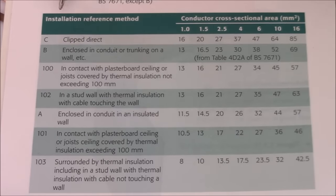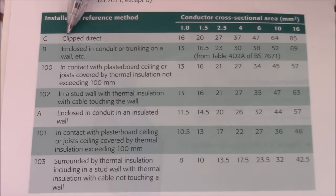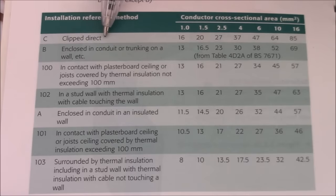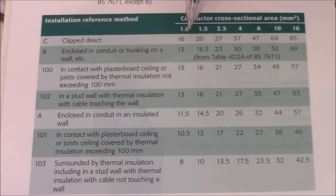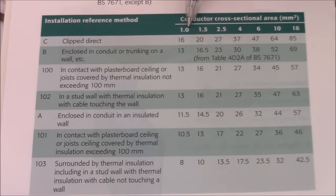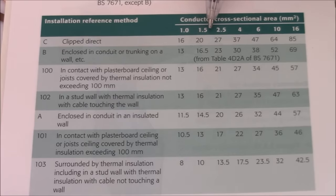Now on this side there's the installation reference method. So Clip Direct basically is when you clip the cable directly to the wall. And this is the rating for let's say 1 mm cable, 16 amp, 1.5, 20 amp, 2.5, 27 amp and so on.